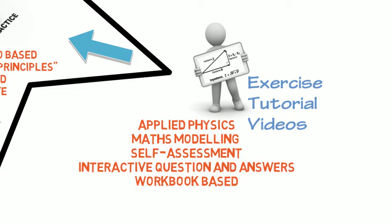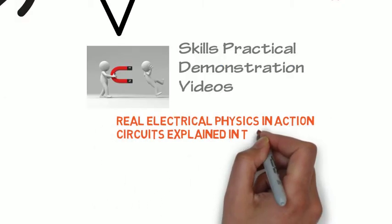Skills practice demonstration videos. These are real, actual physics in action. Circuits are explained in diagrammatic form and then explained again with real components as to how they are actually connected. Measurements are made and explained. All the experiment and activity observations again are explained. Also, they can fast forward, play, rewind and re-look at parts of the video.